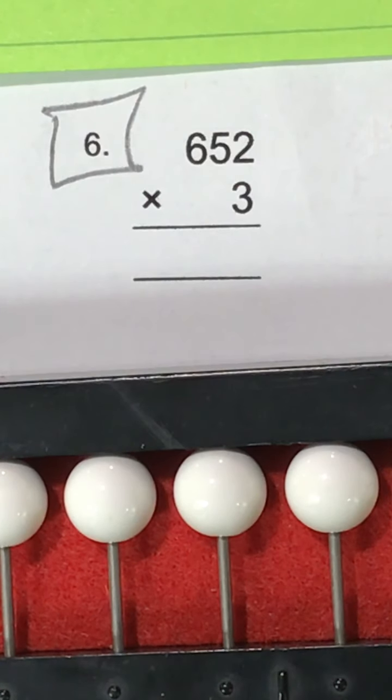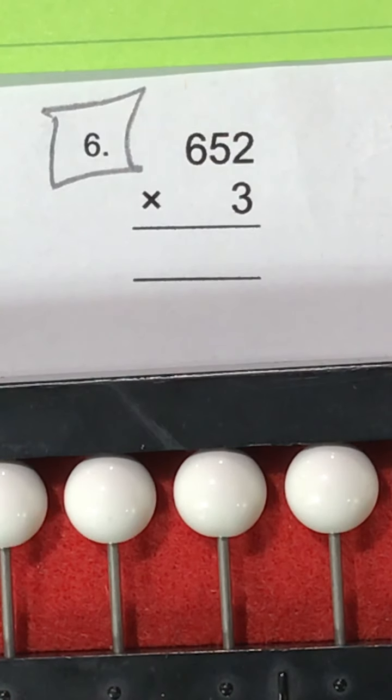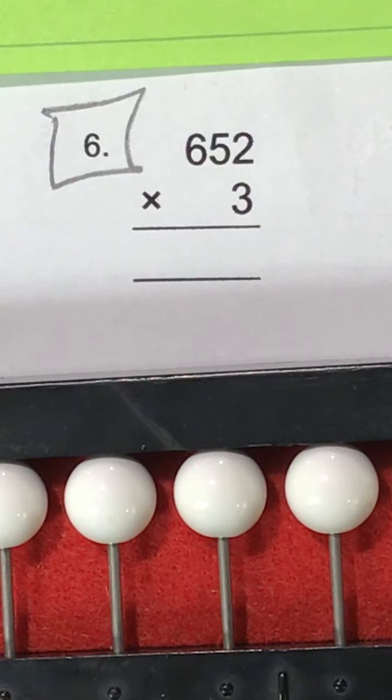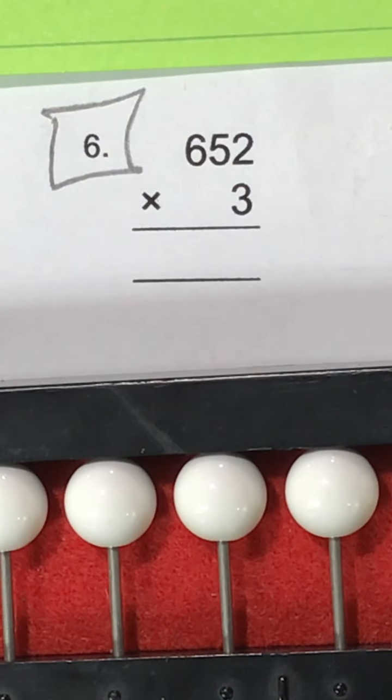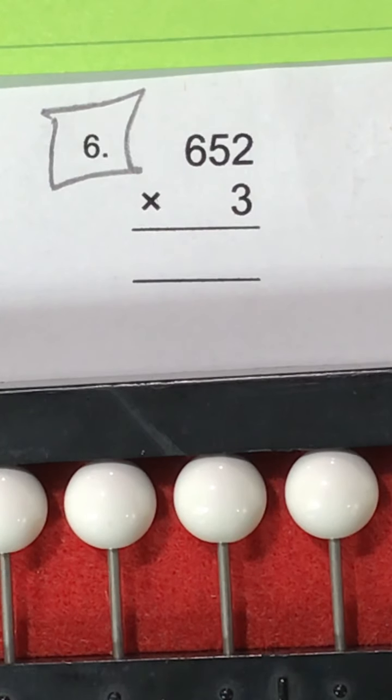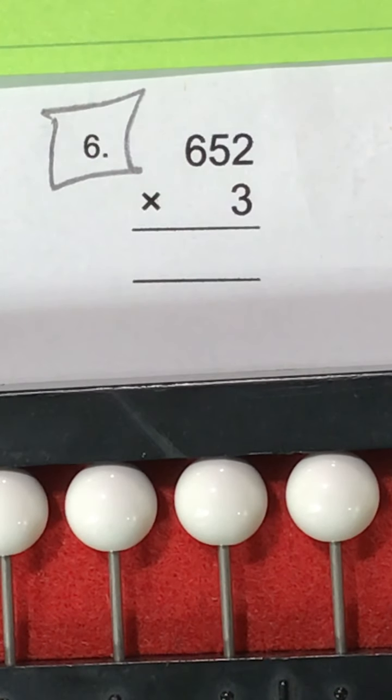Okay here we go your next math problem is 652 times 3. Go ahead and braille that out. Don't forget your equal sign. Hit pause and try to solve it on your own.